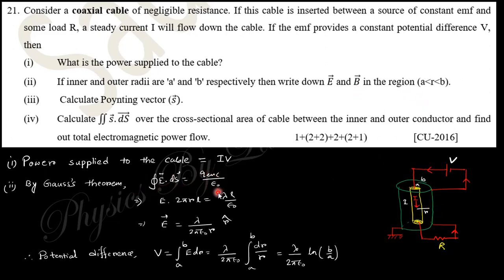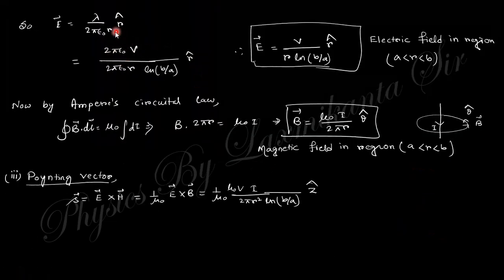From Gauss's theorem, E dot dS equals q enclosed by epsilon naught, so E times 2πrL equals λL divided by epsilon naught. This gives the electric field. The potential is the integral from a to b of E·dr.